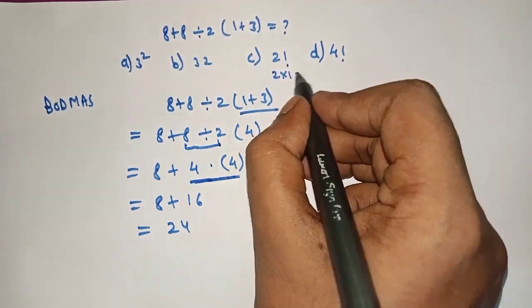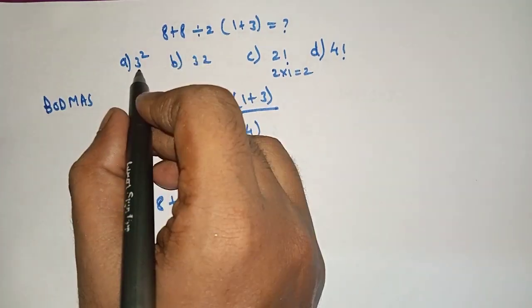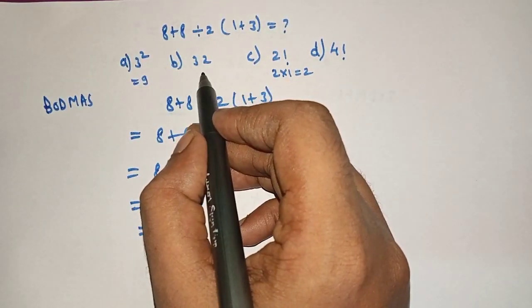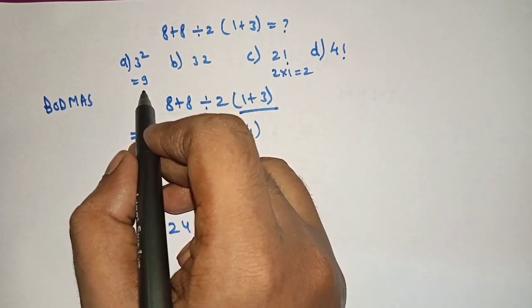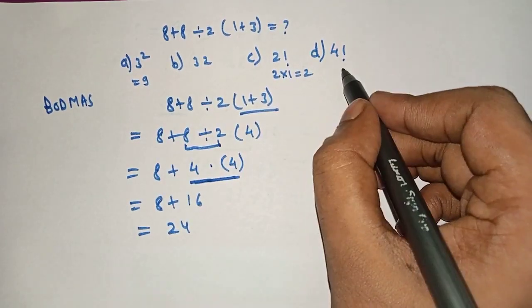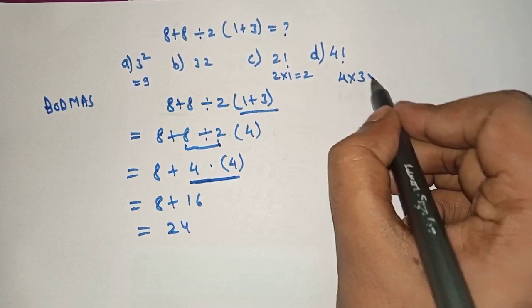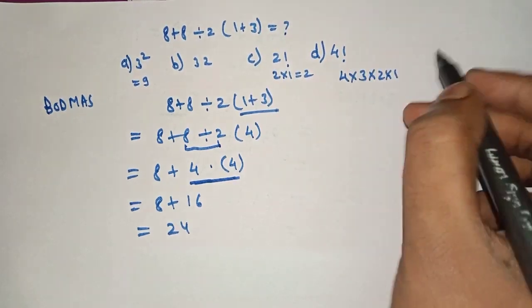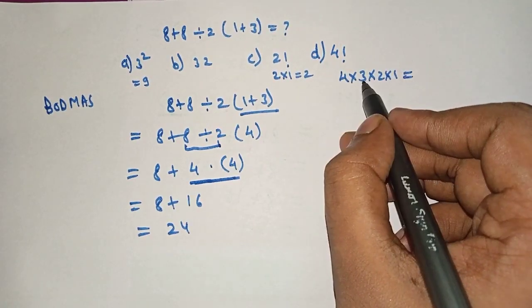3 square is equal to 9, 32 no, 2 no, 9 no. Here we will check this: 4 into 3 into 2 into 1 which is equal to 4 factorial. Therefore, 4 times 3 is 12, times 2 is 24, times 1 is 24.